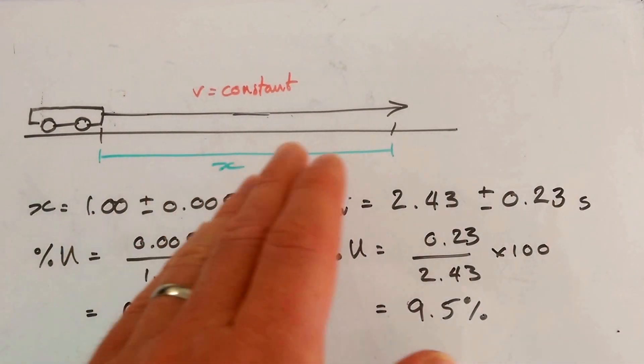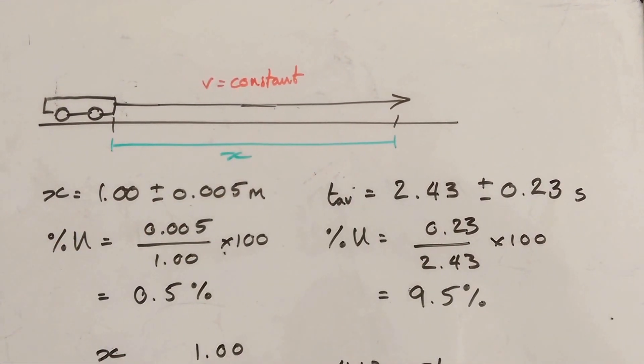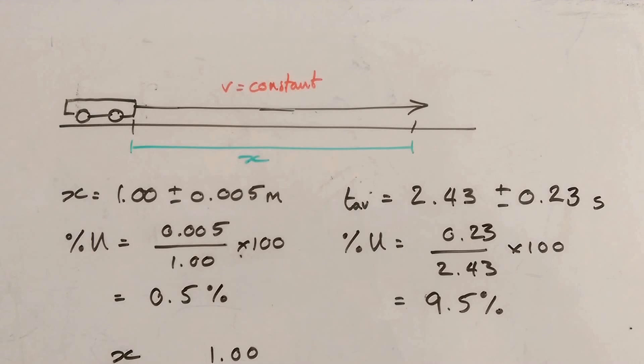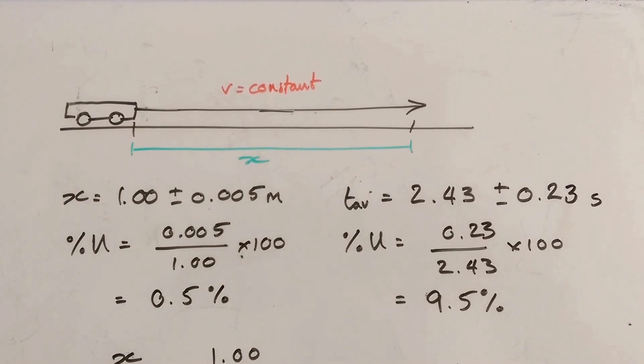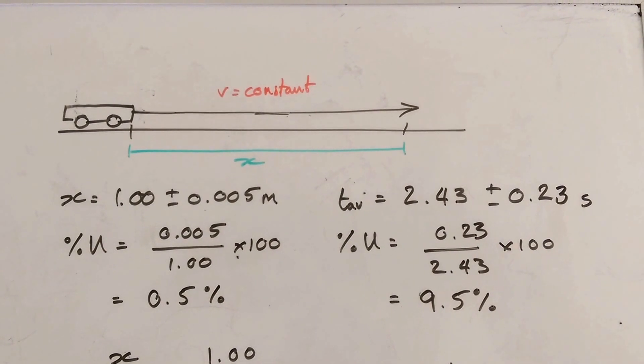So here's a trolley and it's going to travel at a constant speed over a distance X. I'm going to time it with a stopwatch and give you an average velocity. So I've measured X with a metre ruler. It's 1.00. I use the whole metre ruler.